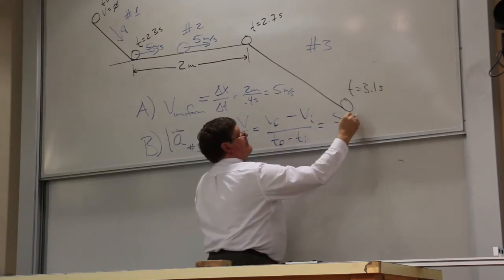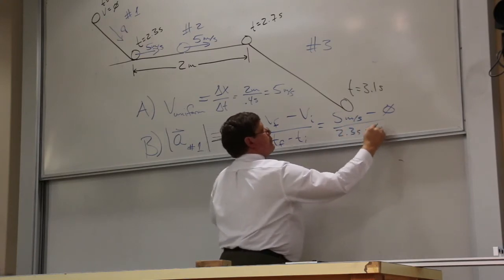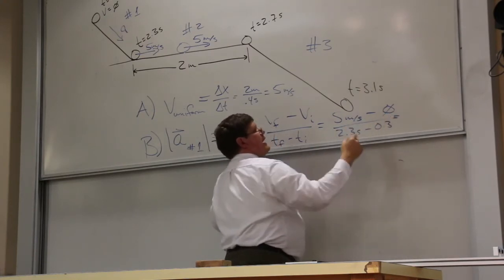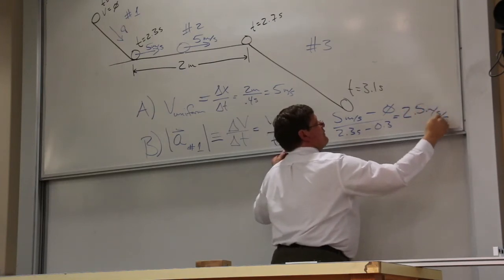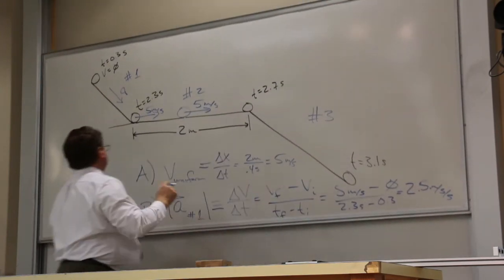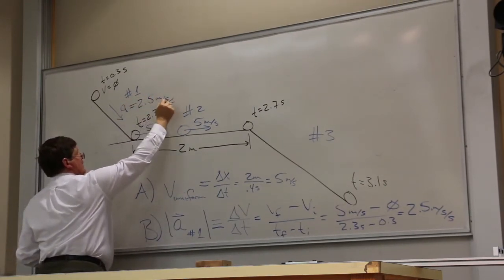That's going to be 5 minus 0 over 2.3 minus 0.3. That's going to be 5 over 2, or 2.5 meters per second every second.